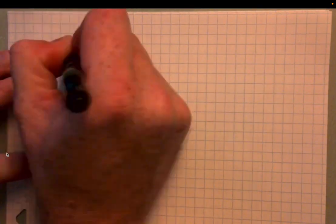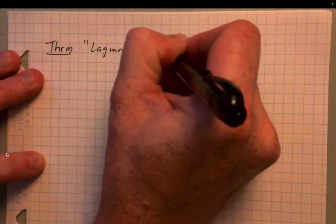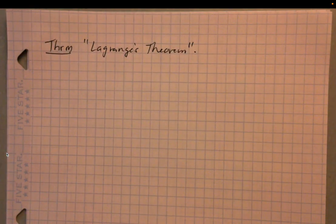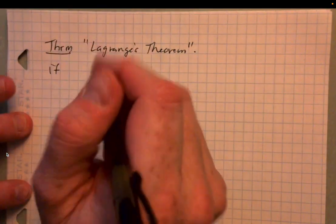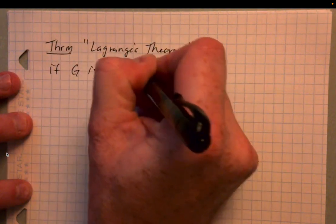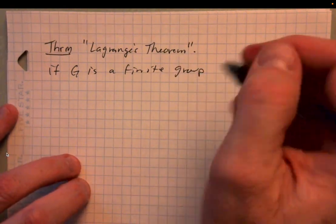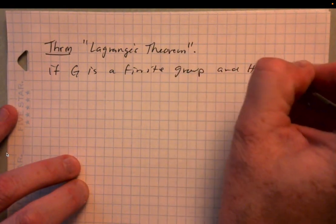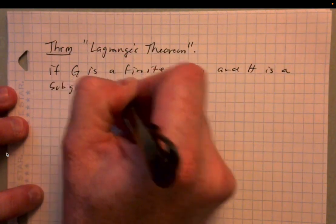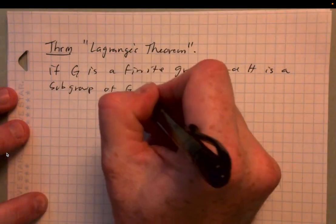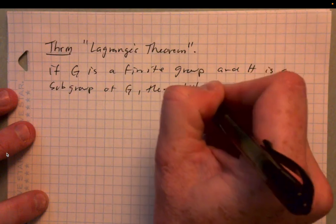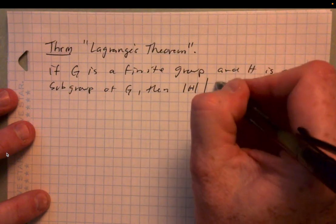We've seen a bunch of examples of cosets, and now it's time to jump to the main topic of the section, and that is Lagrange's theorem.